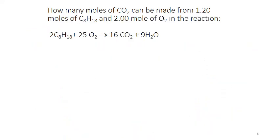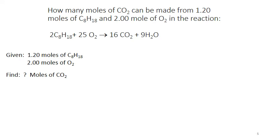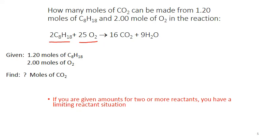Here's another example. How many moles of carbon dioxide can be made from 1.20 moles of C8H18 (octane) and 2.00 moles of molecular oxygen in the combustion reaction? The key to recognizing this as a limiting reactant problem is that we're given amounts of two or more reactants as starting points — both octane and oxygen are on the reactant side. Any time you're given amounts of two or more reactants, you have a limiting reactant situation and must figure out which is limiting.